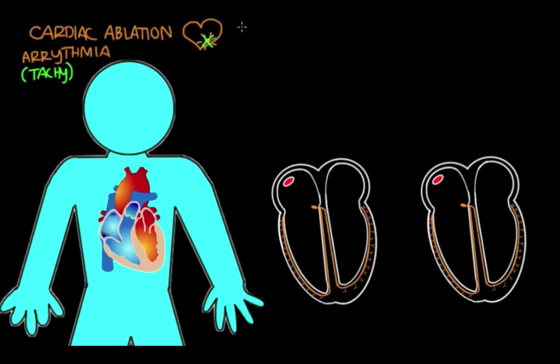Cardiac ablations treat a variety of arrhythmias such as atrial fibrillation, which is a condition where the atrial walls or the top chamber walls spasm. It also treats atrial flutter, which is another type of fast heart rate that stems from the top chambers. Ablation is used to treat ventricular tachycardia, which is a fast heart rate stemming from the ventricles or the lower chambers.